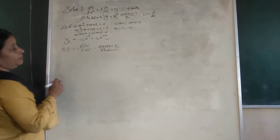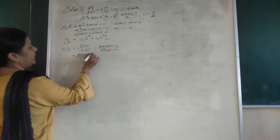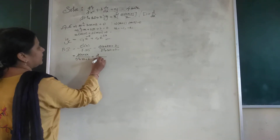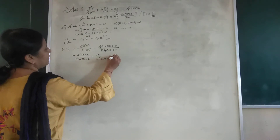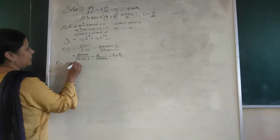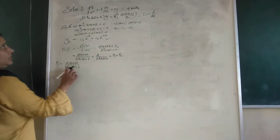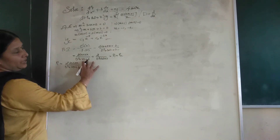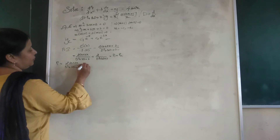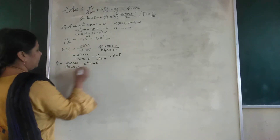We can split the particular integral into two parts: P1 = 2cos(2x) / (D² + 3D + 2) and P2 = 2 / (D² + 3D + 2). P1 is under Type 2, and P2 can be considered under Type 1. For Type 2 we need to replace D² by -a², and here a = 2, so we replace D² by -4.